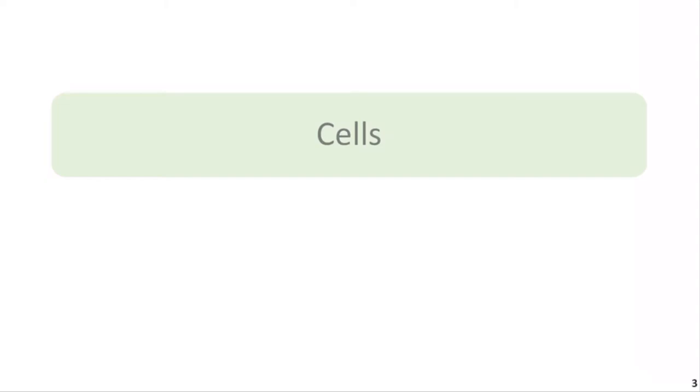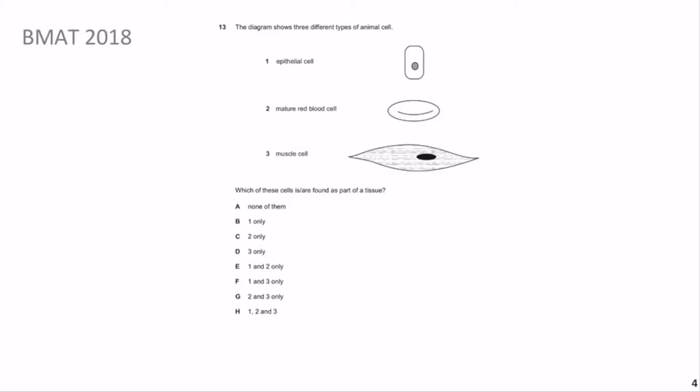In this video we're going to cover questions on cells. The type of things they expect you to know includes the general format of cells and how cells are organized into tissues, organs, and so on. All the details are in the BMAT specification, which I highly recommend you print out and use as a checklist - mark off what you know and what you don't. If you're coming in as a future medical or natural sciences student, you'll know a lot of this from A-levels, but some things carry over from GCSE.